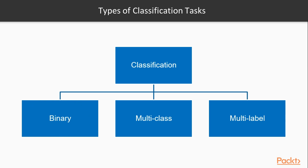In this course we are only going to talk about binary classification tasks, because first it will be better for your understanding, and second, these models provide the basis for the other types of classification. In scikit-learn, you can use almost the same code to go from binary classification to multi-class classification — you just have to provide an extra argument to the object most of the time. Multi-label problems are a little more complicated and are out of the scope of this course.